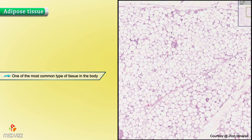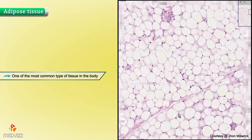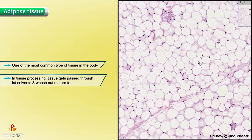Let's zoom in a little more and nail this down. The reason why fat appears so clear is because during tissue processing, the tissue is passed through fat solvents, and the mature fat gets washed out. That's why these are all wide open spaces — the tissue, chiefly neutral fat, is gone.